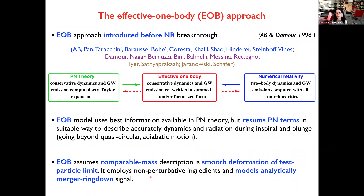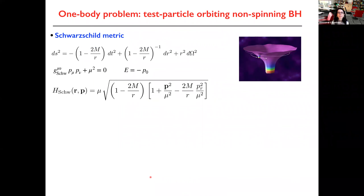The assumption in this approach is that at the end of the day, the two-body dynamics of comparable mass is just a deformation of the one-body system. The one-body Hamiltonian: taking Schwarzschild, the Hamiltonian equation for a body of mass mu in this geometry is written here. The energy is just minus p-naught; you can solve this equation for the energy. That energy is the Hamiltonian of the system, which as a function of time is described by r and p.